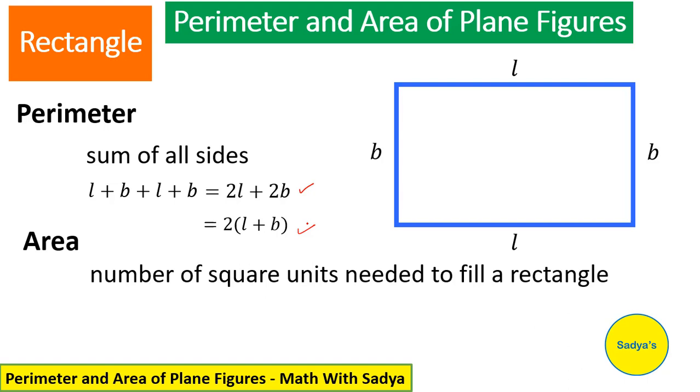Area of rectangle means how many square units are needed to fill a rectangle. And in other words, simply length into breadth. Length is L and breadth is B. So, the formula for area of a rectangle is L multiplied by B.